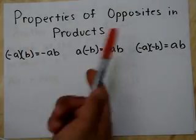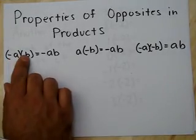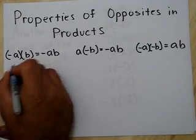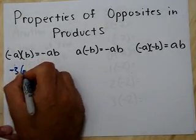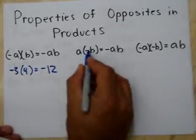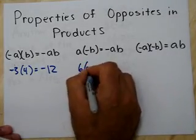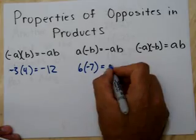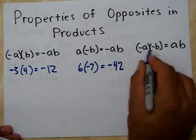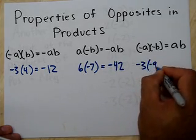A negative times a positive gives a negative product — for example, negative 3 times 4 gives you negative 12. And a positive times a negative also ends up negative — like 6 times negative 7 gives you negative 42.